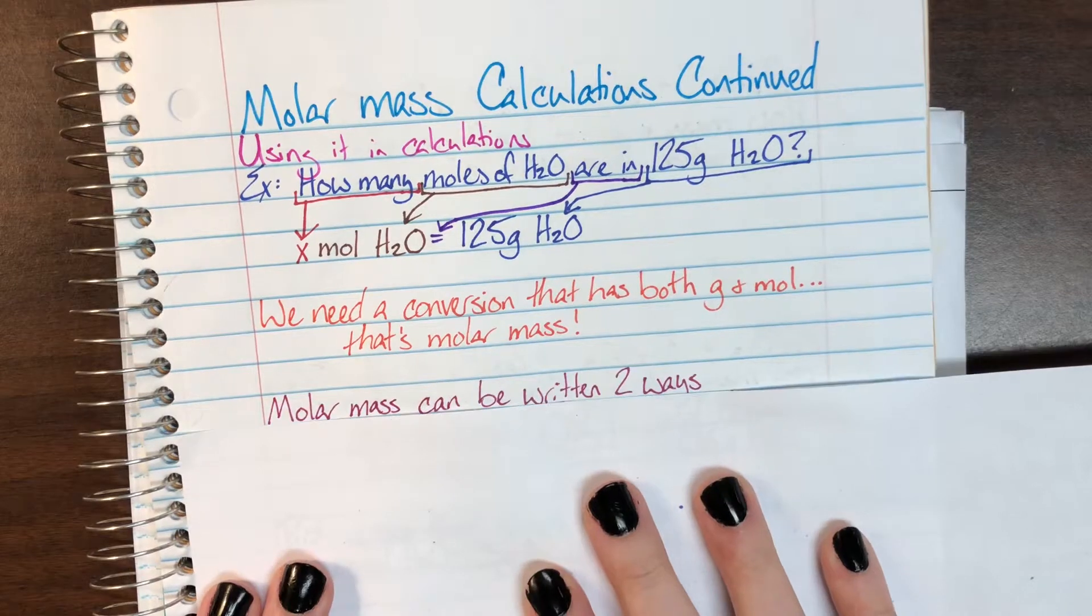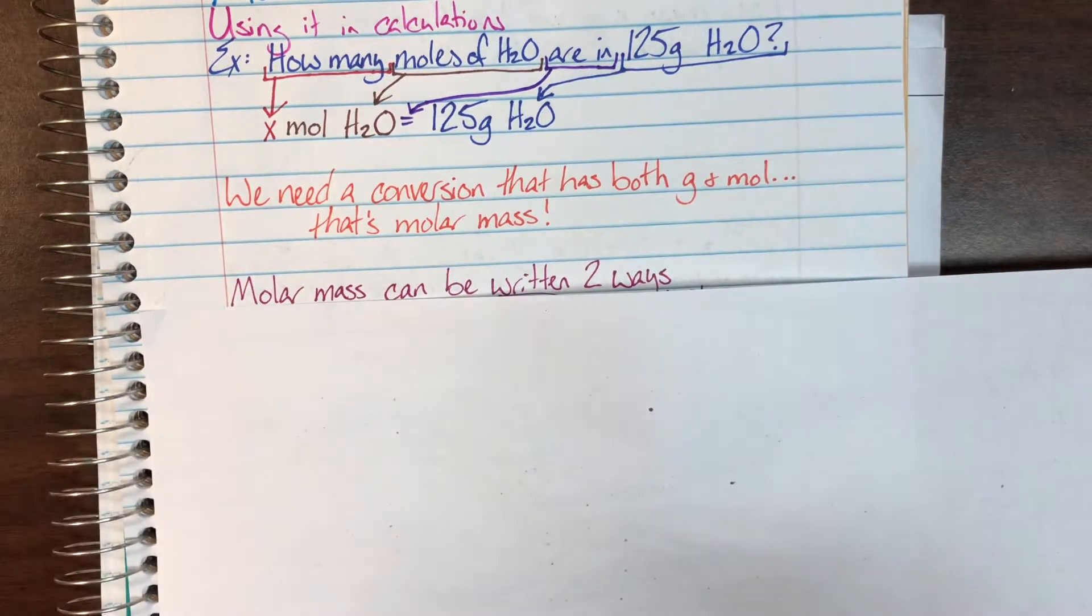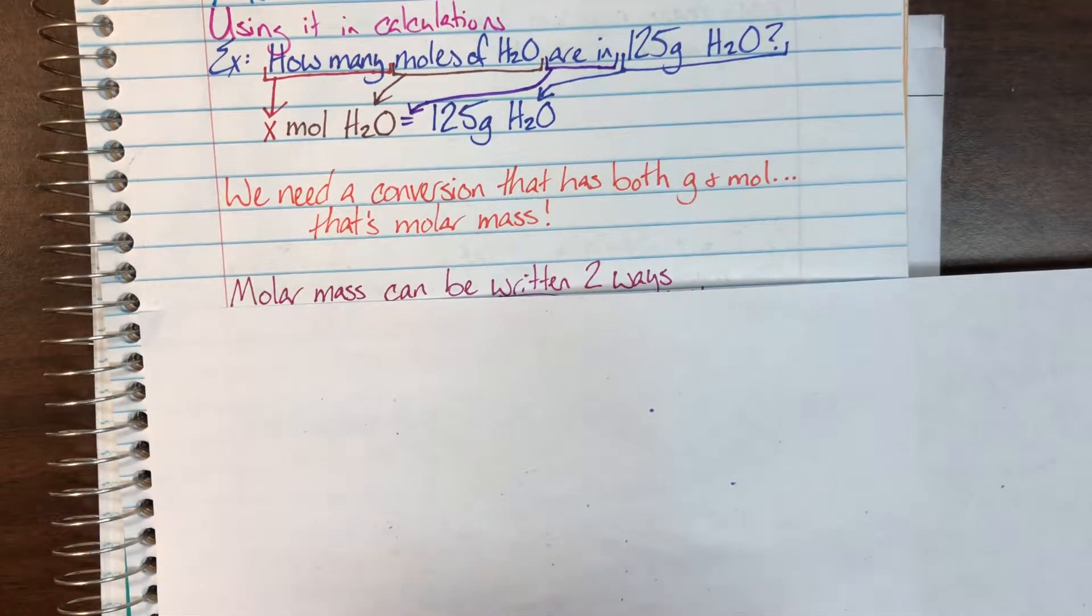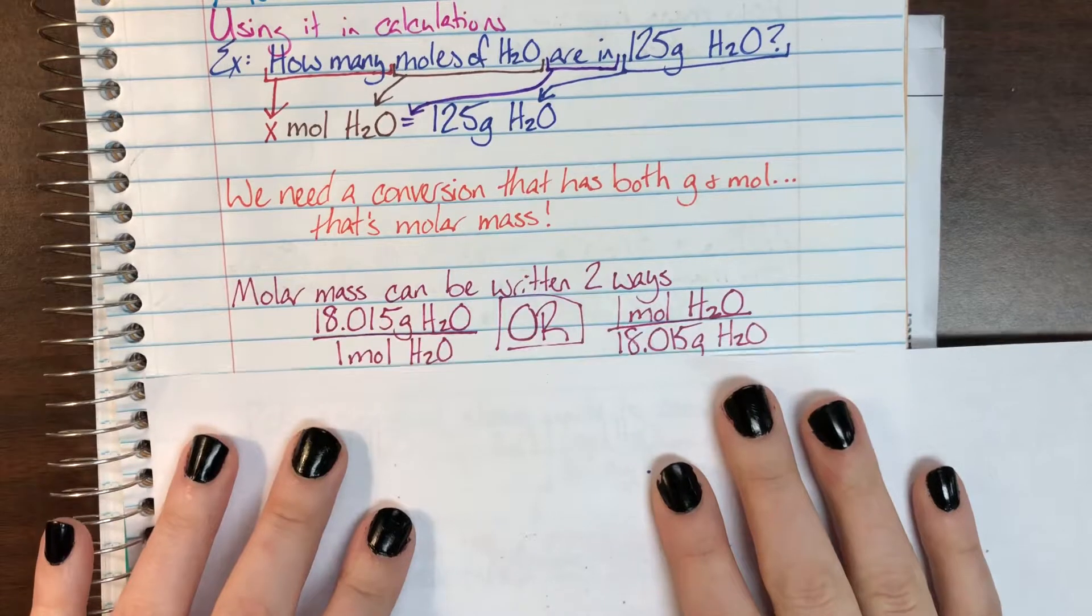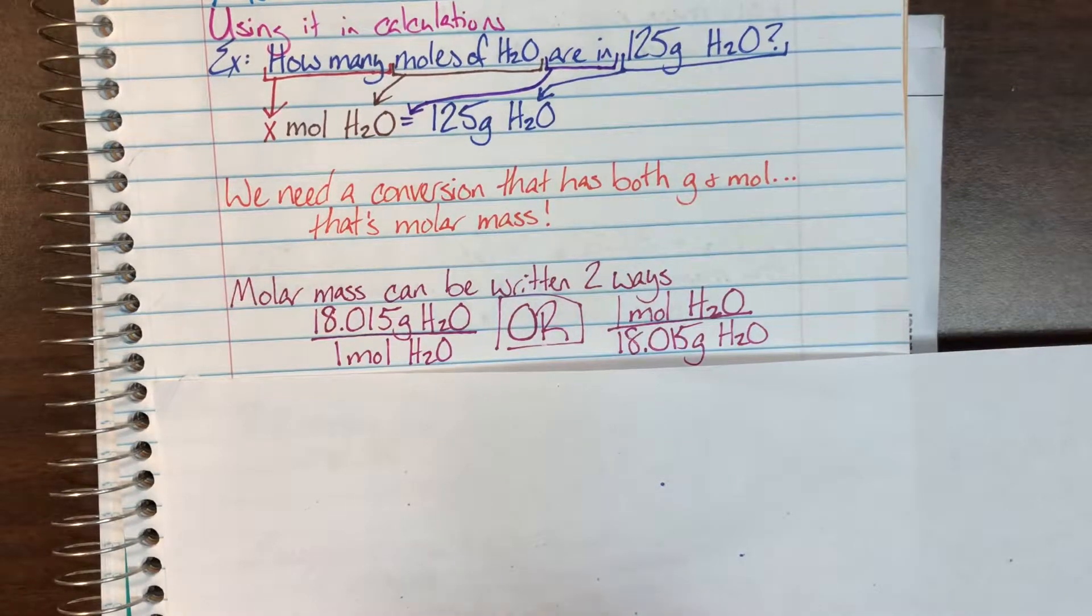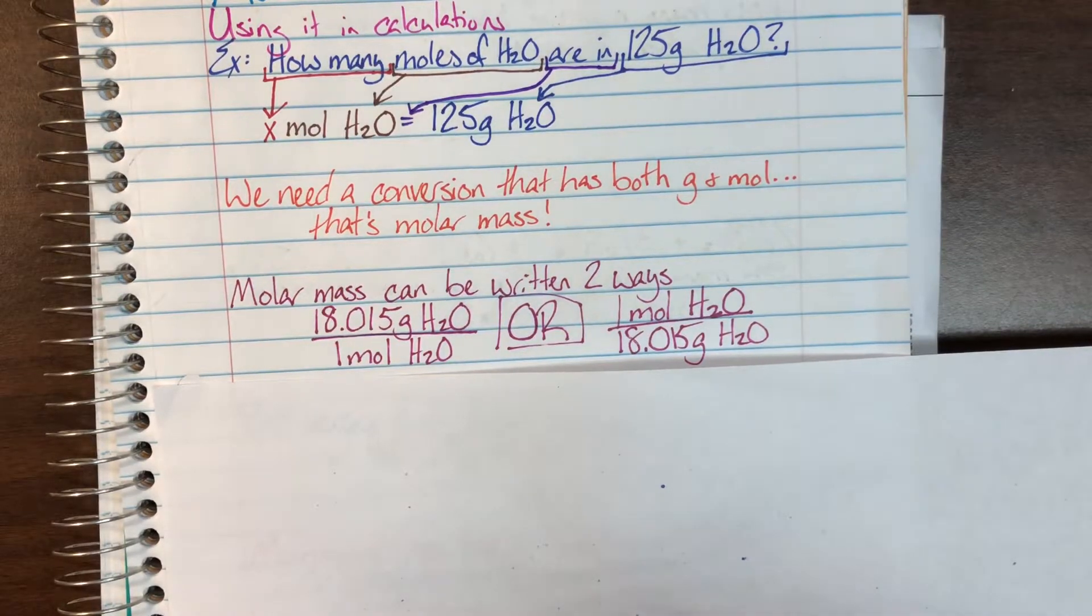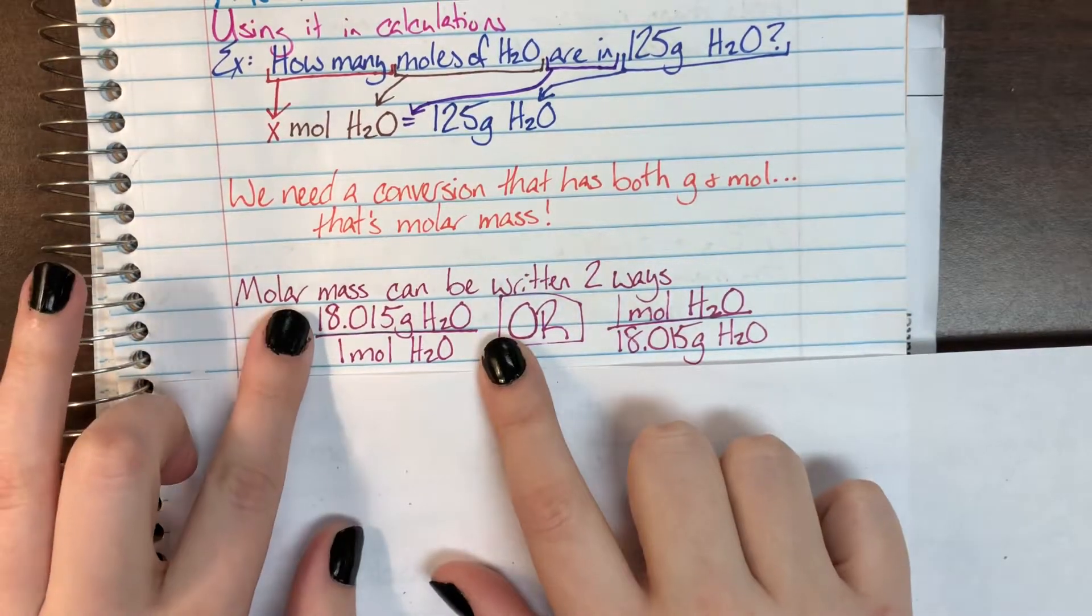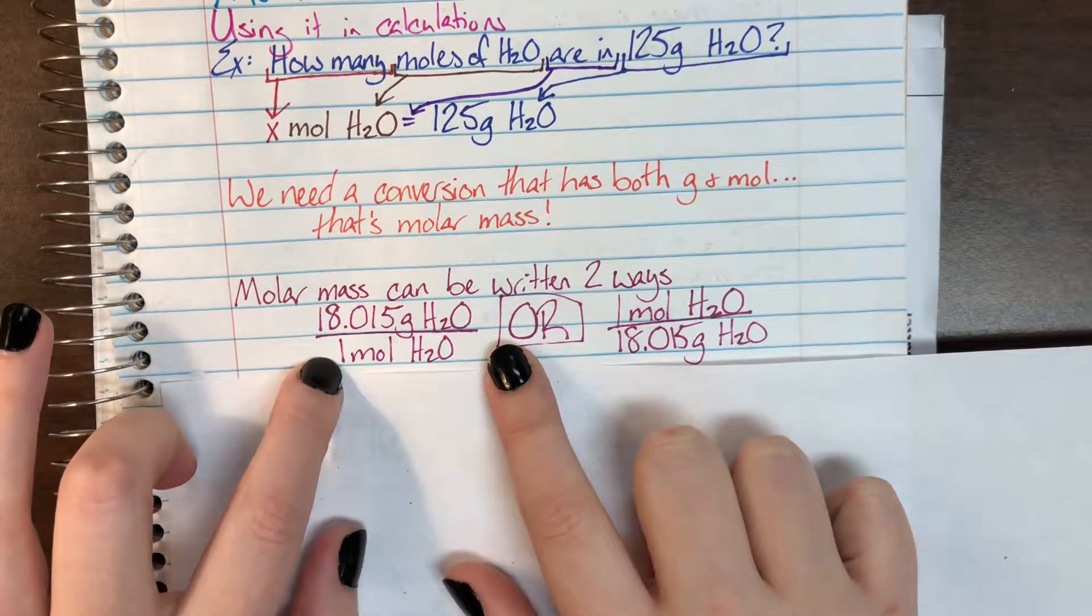So our molar mass that we've seen so far has just been written in a straight line. But it's grams per mole. That's a fraction. And in math, when we're dealing with fractions, we don't normally write them out straight in one line. We write them vertically, one over the other. So we're going to do that exact same thing with our molar mass. Now remember that molar mass is a ratio. It's not a true fraction. So this is just me saying for every 18.015 grams of water, there's one mole of water.